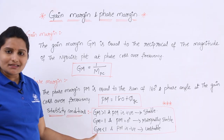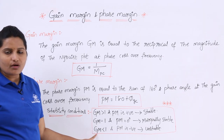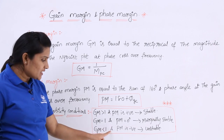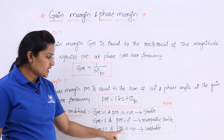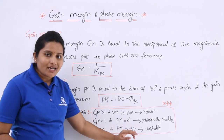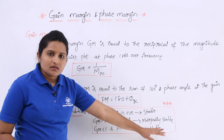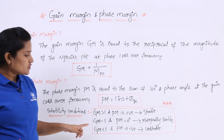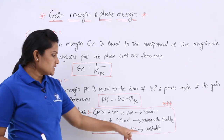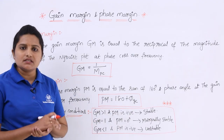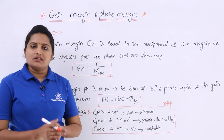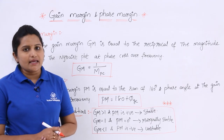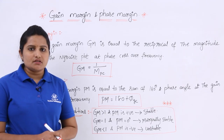The final stability condition: if gain margin is less than 1 and phase margin is negative, then the system is said to be unstable. By considering all these conditions, you can analyze the system stability using the Nyquist plot.